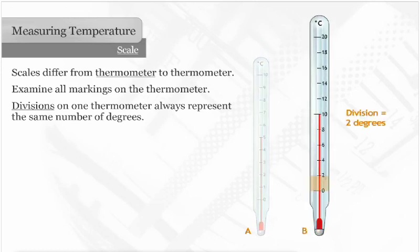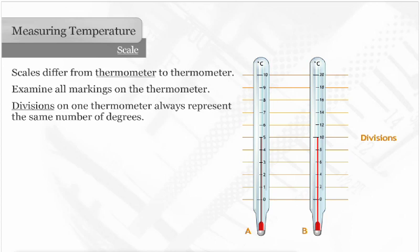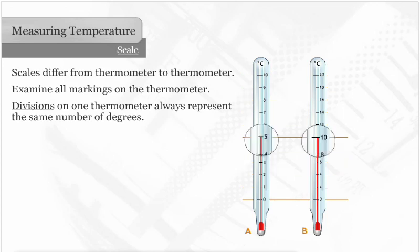Now look at thermometer B, where each division represents two degrees. Comparing thermometers A and B, the heights of the red lines are the same, the zeros are in the same position, the divisions are the same in size, but the temperature is different.